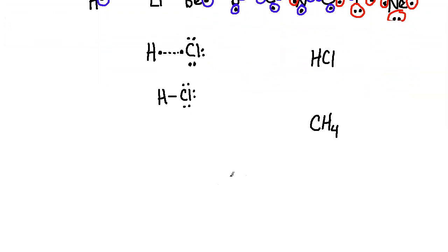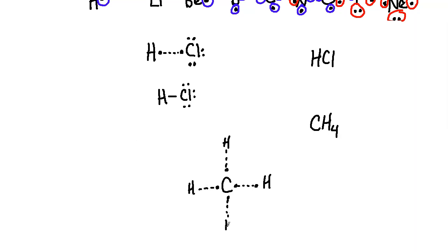For methane, CH₄, carbon has four electrons — one on each side, all unpaired. Hydrogen has one each. Carbon has four unpaired electrons, so we bond one hydrogen to each, forming four single bonds. Methane's Lewis structure shows carbon with four lines, each attached to a hydrogen.